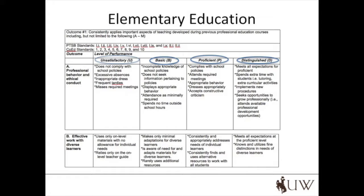Walking across the rubric, you can see that there are four levels of performance. Each level of performance has a descriptor which provides some markers of performance at that level and for that topic. For example, if we look at the Basic rating on Professional Behavior and Ethical Conduct, we can see that this rating would apply if the student teacher has incomplete knowledge of school policies, does not seek information pertaining to school policies, displays appropriate behavior, attends as minimally required, and spends no time outside of school hours.